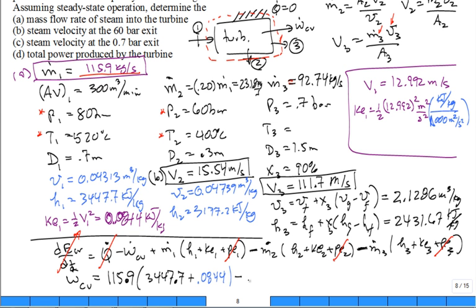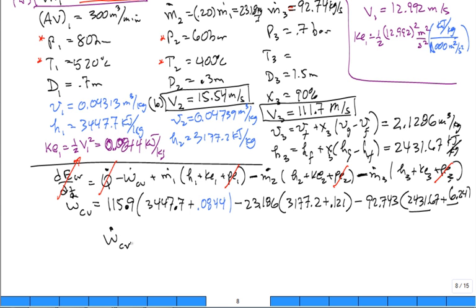Okay. Then we're going to put minus the mass flow rate at 2, 23.186 times the enthalpy at two. Enthalpy at two was 3177.2 plus the kinetic energy at two, 0.121. Negligible as well. Minus the mass flow rate at three. Mass flow rate at three, 92.743. Enthalpy at three. Enthalpy at three, 2431.67 plus the kinetic energy at three. The kinetic energy because the speed is so much higher is 6.24. So the kinetic energy at that high speed is it's more appreciable. Possibly, you know, it's still pretty small compared to the other ones, but you can calculate the power 99,930 kilowatts.